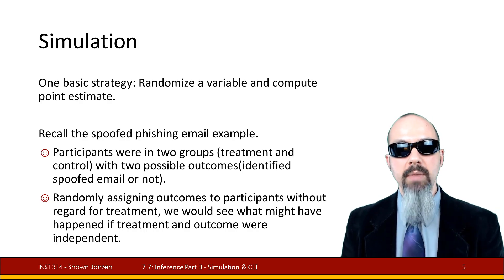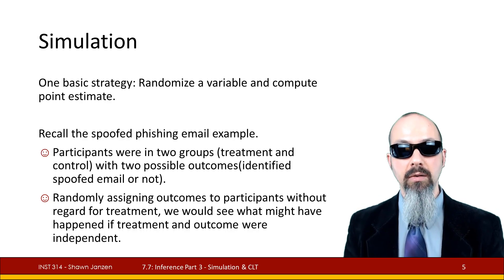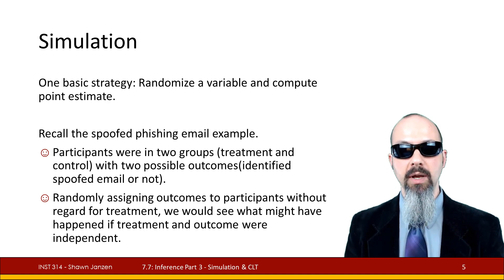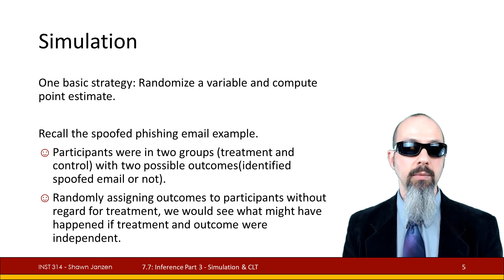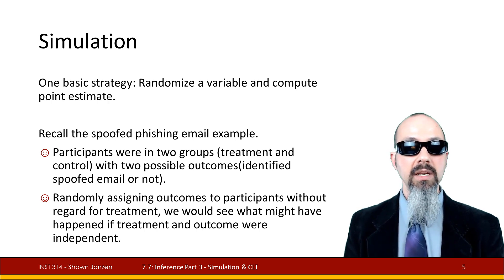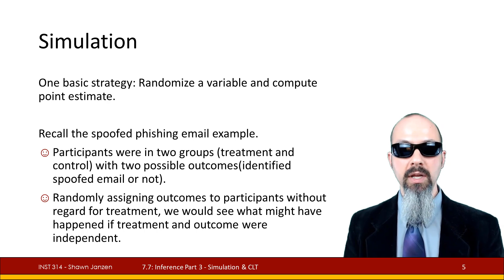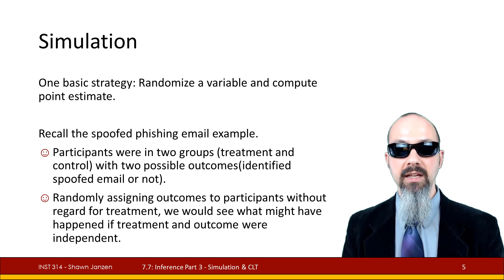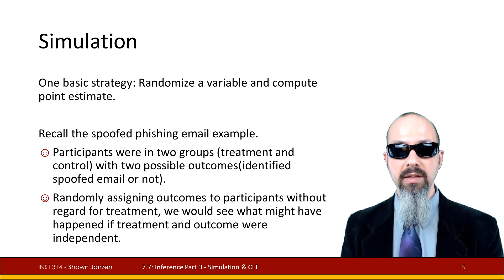With simulation, there's one basic strategy. You have some variable that you're trying to model, and we randomize it, and from that randomized variable we compute a point estimate. Using the example of our spoofed phishing email: we had participants sorted into two groups — treatment and control — with two possible outcomes: whether you identified the spoofed email or not. The idea is that if the treatment and control groups were independent, it wouldn't matter which group you were in — you'd have the same likelihood of identifying the spoofed email. We can use this randomization with simulation to see whether these groups are independent.